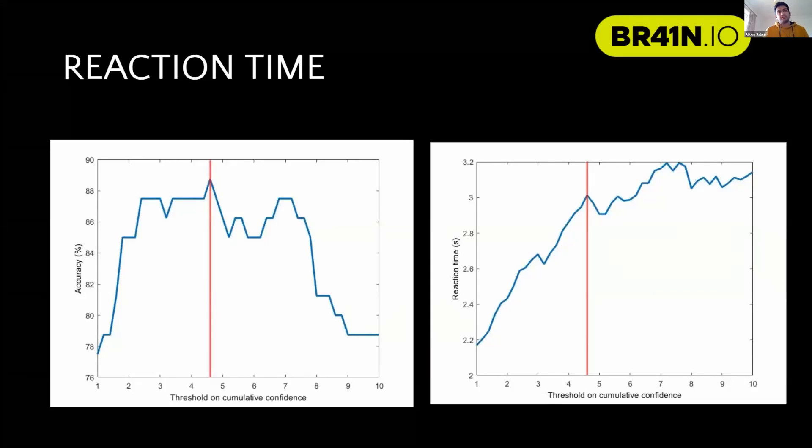The classification algorithm can give us a confidence value, which in most cases is a probability value. How likely is it that this signal belongs to class left or right? We added this confidence value over different windows and created cumulative confidence.